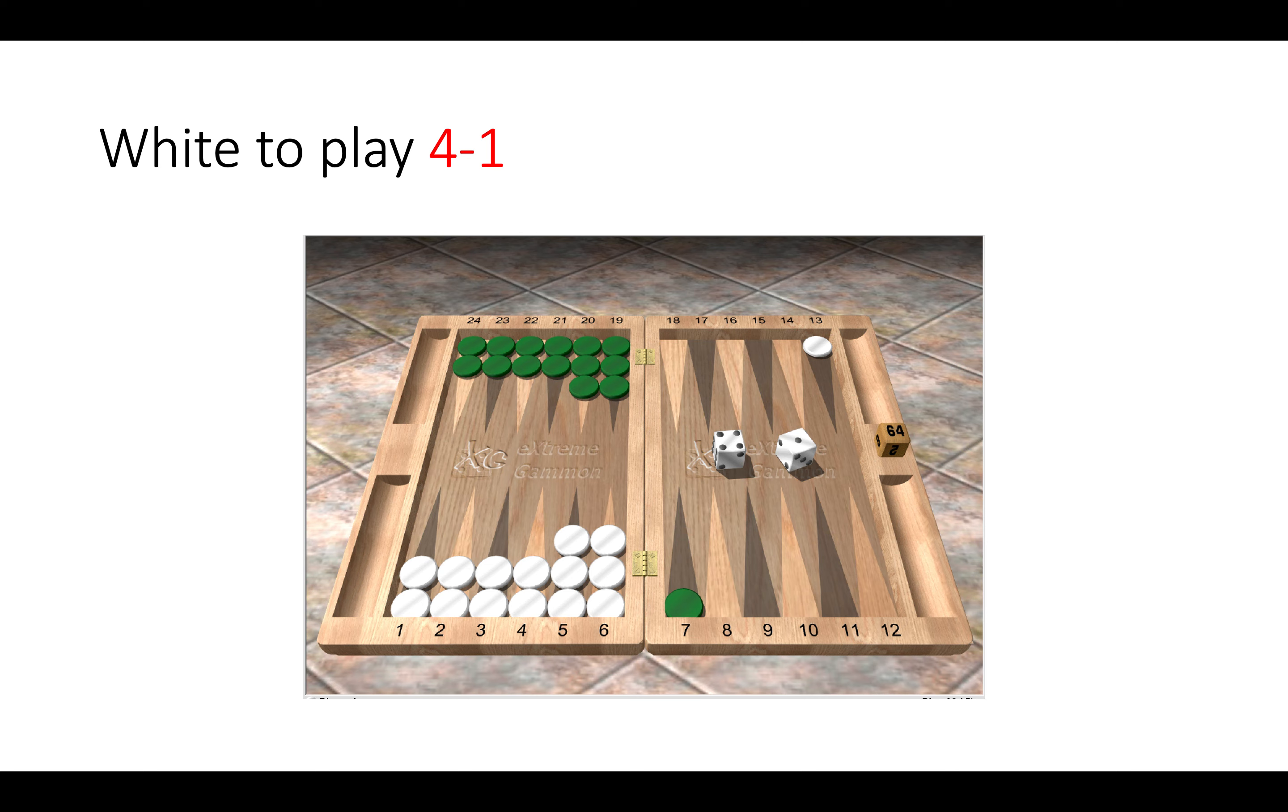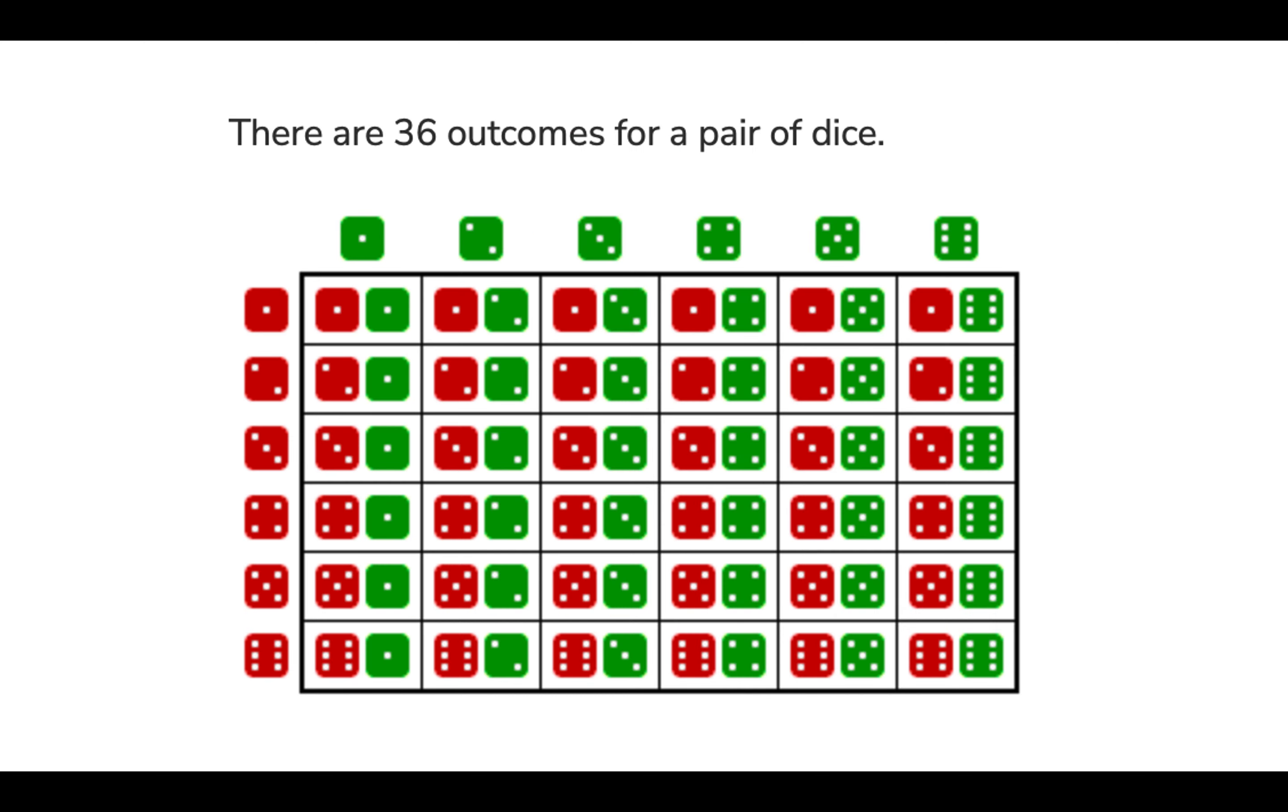Now we come to the answer by considering shot counting, and to understand shot counting we need to understand the rolls of the dice. So with two dice there are 36 combinations or outcomes, and you can see them all on the screen now. There are six doubles and there are 30 non-doubles.